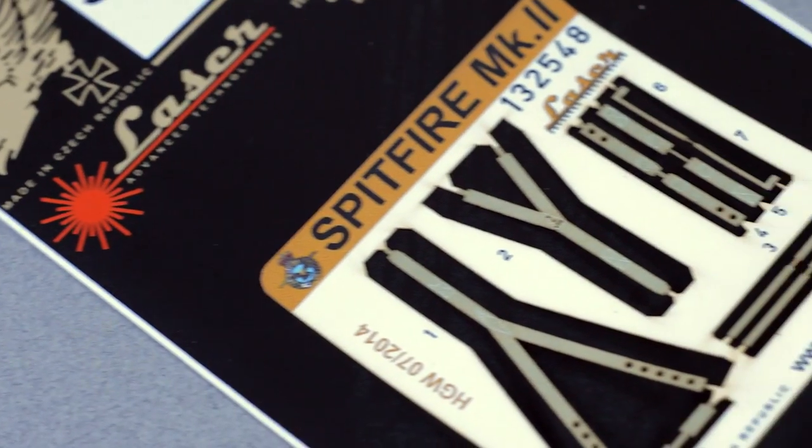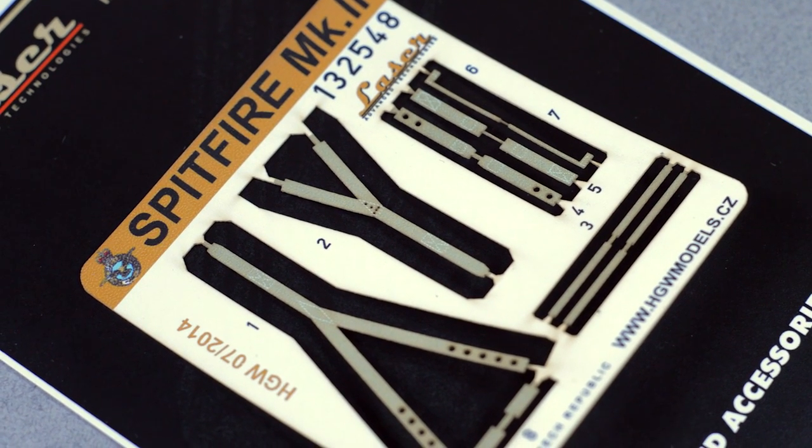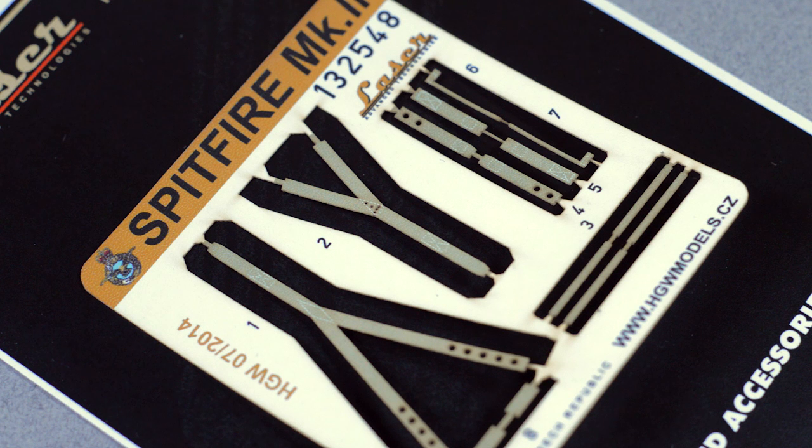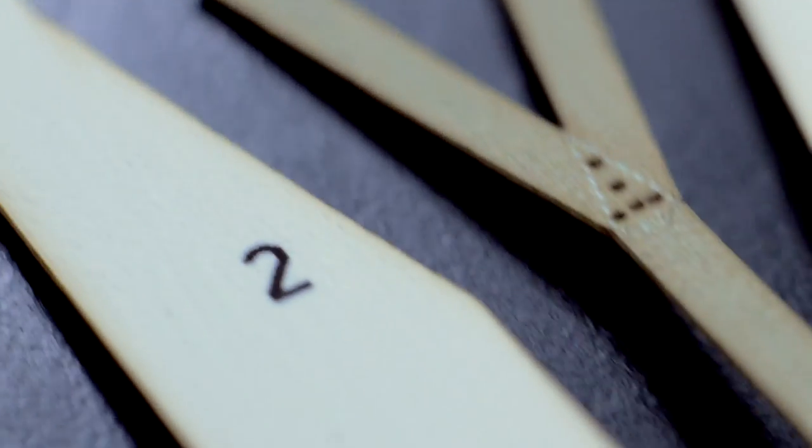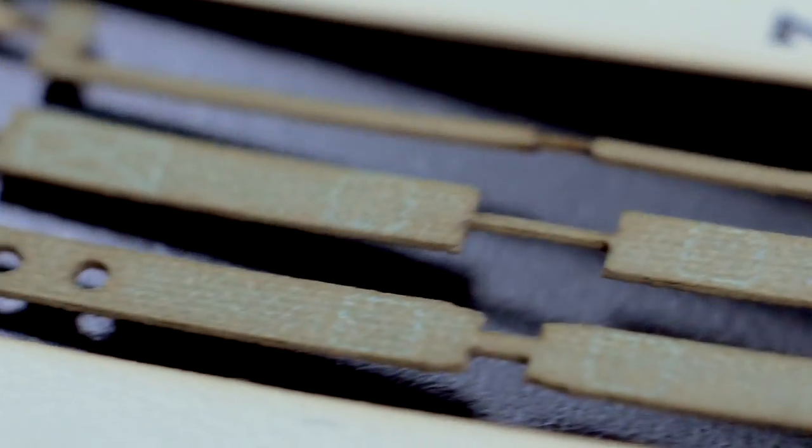The reason why I wanted to experiment and have this set and try it out was, of course, the textile parts. The description in the packaging says pre-cut micro-textile seatbelts, fine print, real textile, natural texture, soft material. And I can say that all of this is true.